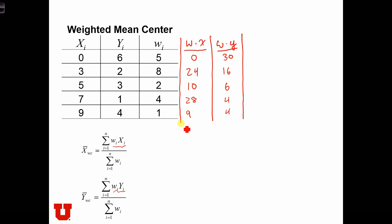Next, we have to add up these two columns in order to build the numerators of these equations. The sum of wx is the sum of this column: 24 and 10 is 34, 54 plus 8 is 62, and 9 is 71. And the sum of this column is 46, 52 plus 8 is 60.